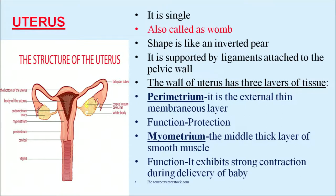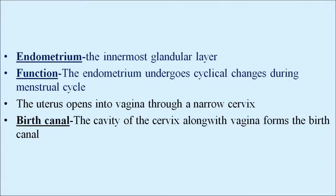The uterus — also called the womb — is single and shaped like an inverted pear, supported by ligaments attached to the pelvic wall. The wall of the uterus has three layers: the perimetrium — the outermost thin membranous layer that provides protection; the myometrium — the middle thick layer of smooth muscles that exhibits strong contractions during delivery of the baby, called parturition; and the endometrium — the innermost glandular layer that undergoes cyclical changes during the menstrual cycle. The uterus opens into the vagina through a narrow cervix, and the cervical cavity along with the vagina forms the birth canal.